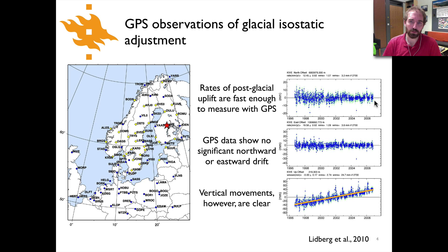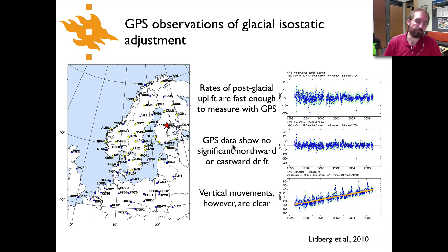However, if we look at the vertical movement — the upward offset — there's a clear linear trend showing uplift of the surface over the last 10 years. At this site you're probably looking at something like four millimeters a year of uplift. As you get closer to the Gulf of Bothnia the rate is a bit faster, up to about 10 millimeters per year, whereas here in central Finland it's probably a bit slower. Nonetheless, you can very clearly see a trend of vertical motion recorded in the GPS data.